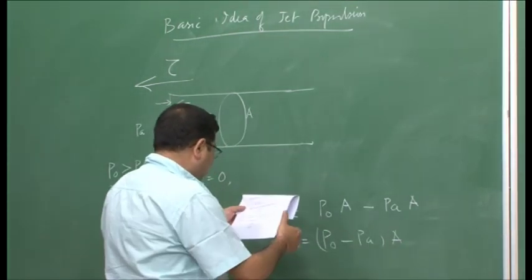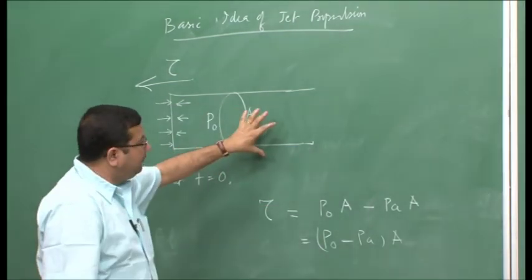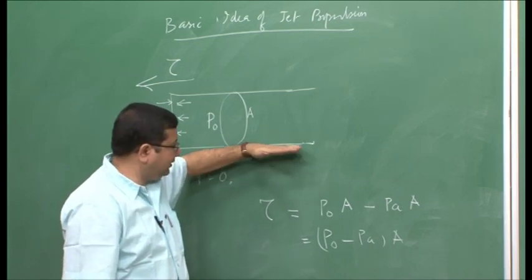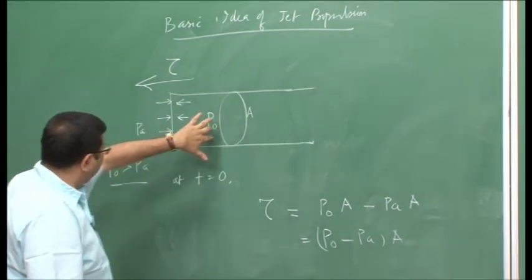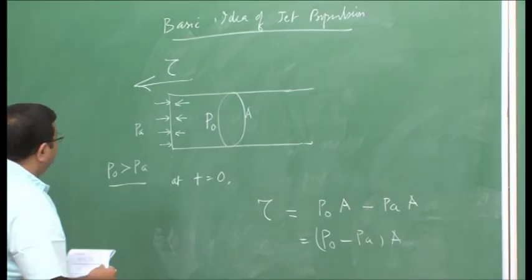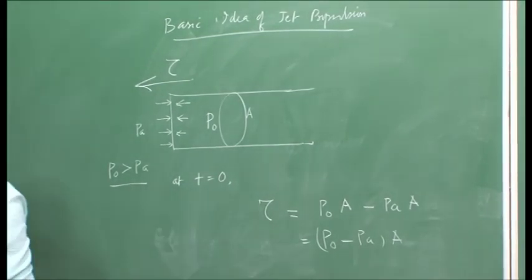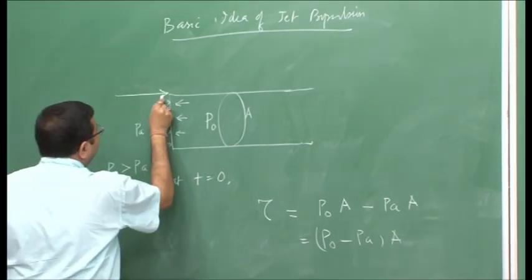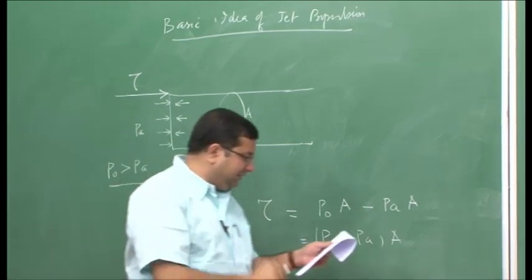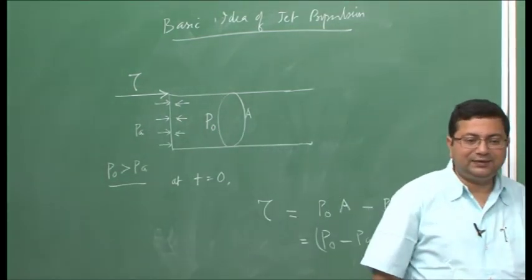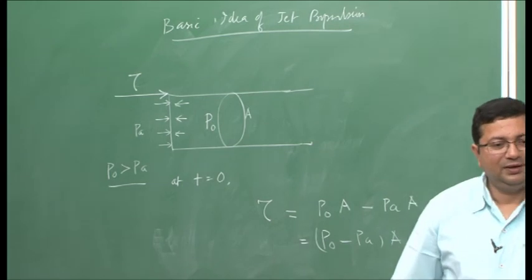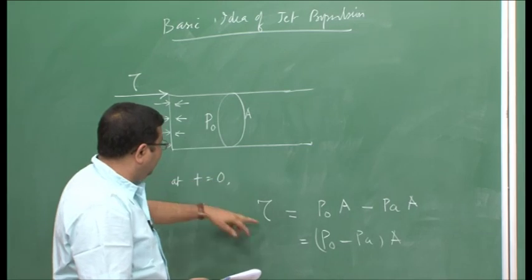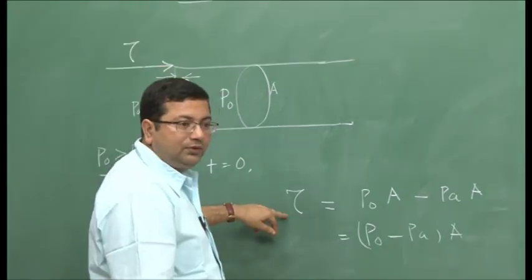This force, if the system is kept on a frictionless surface, will cause it to start moving. In order to prevent this from moving, we exert a force in the opposite direction tau, which prevents it from moving. That is the reaction force. The instantaneous thrust is this reaction force.